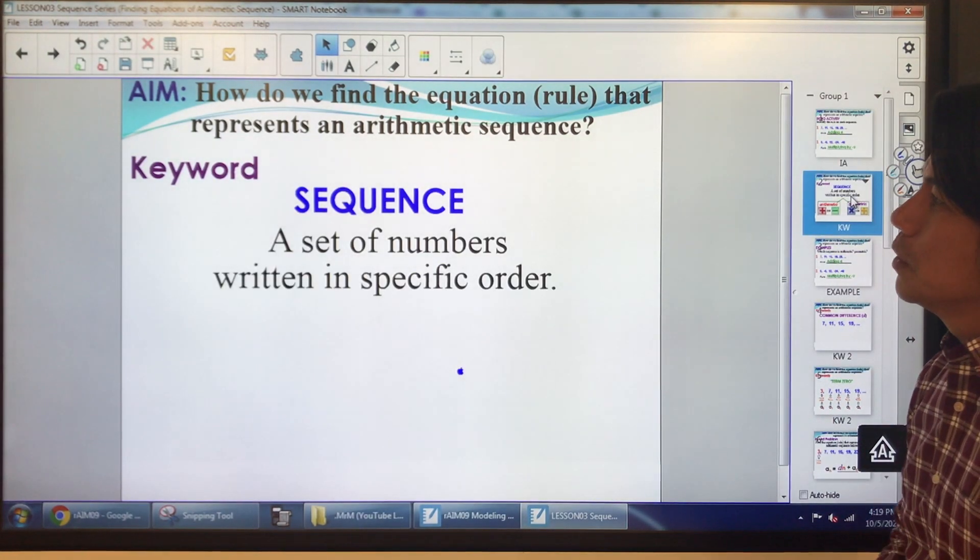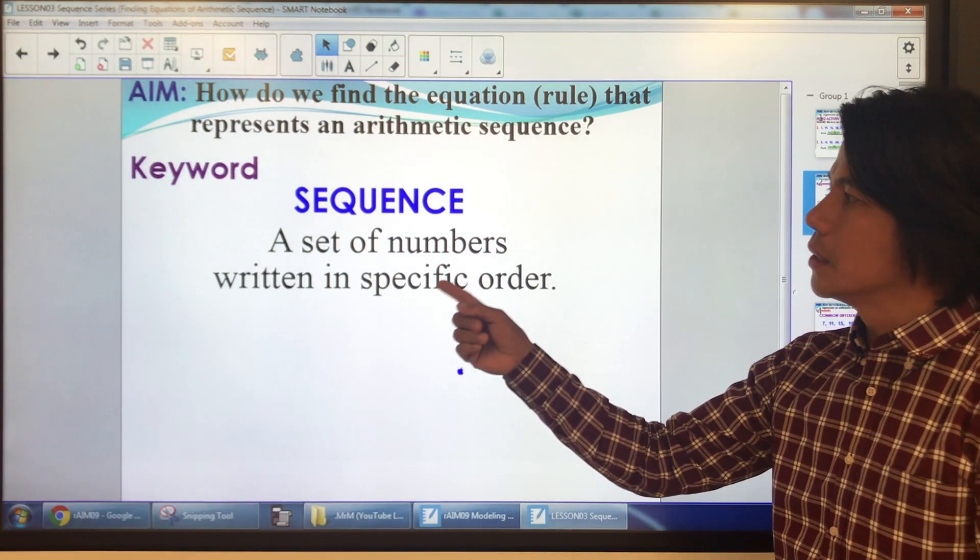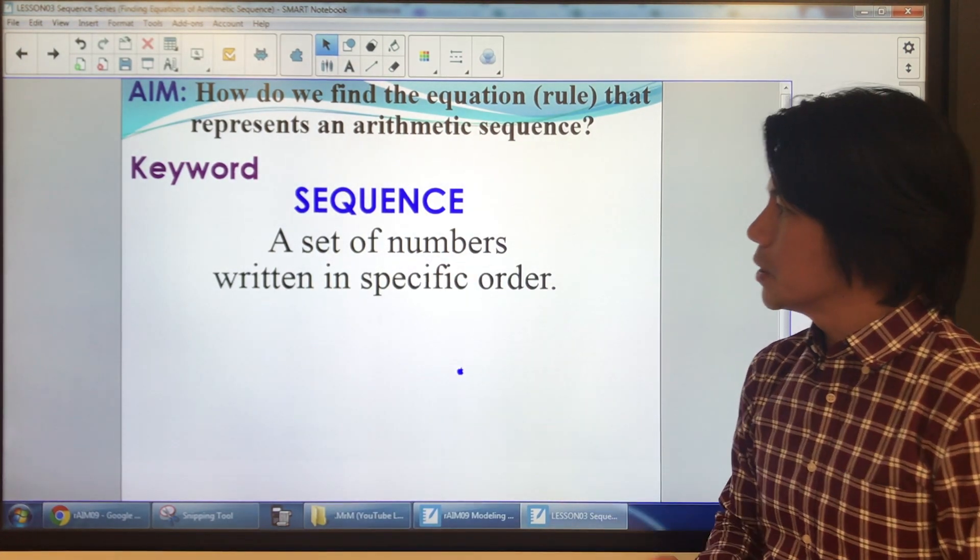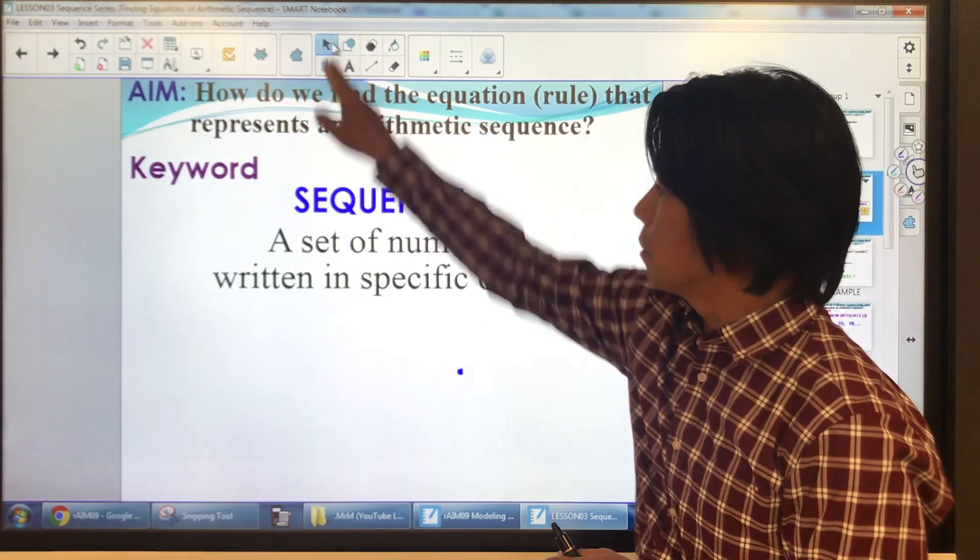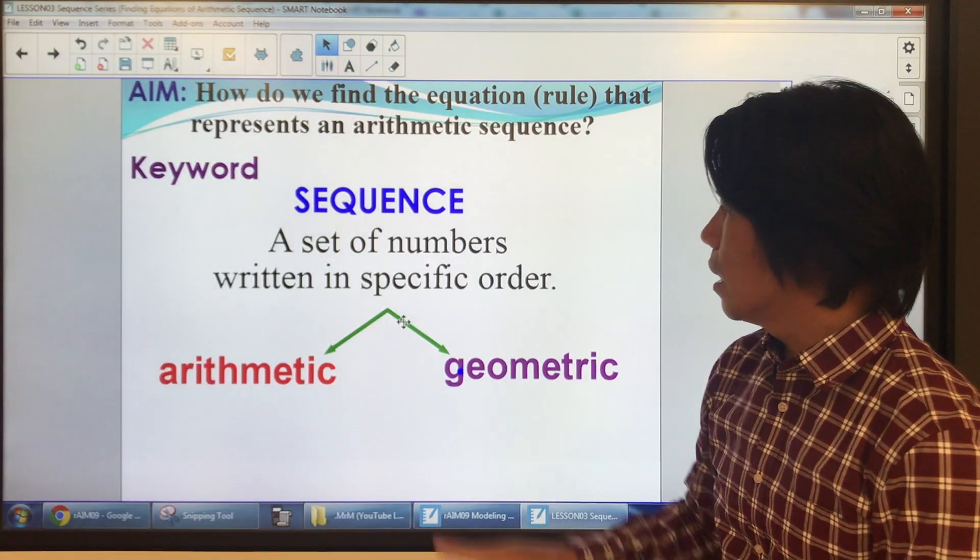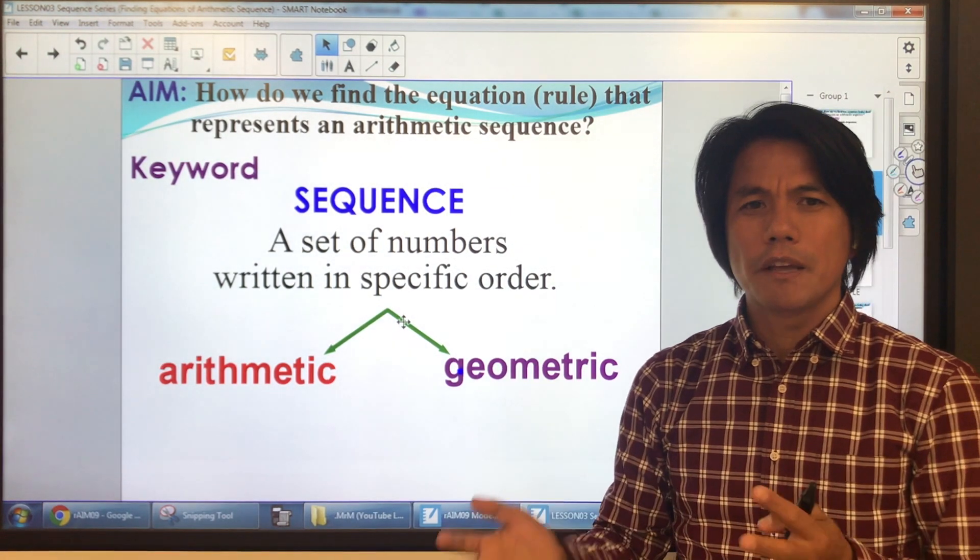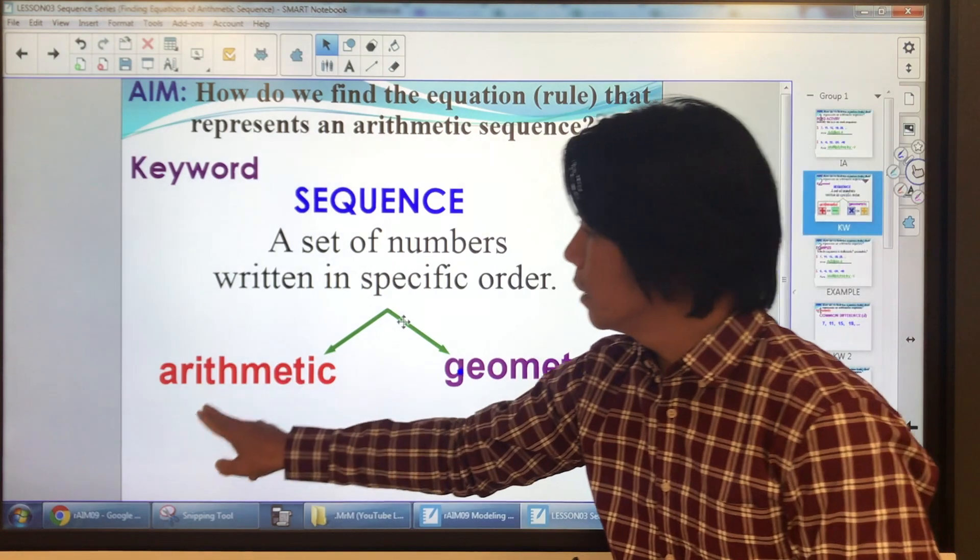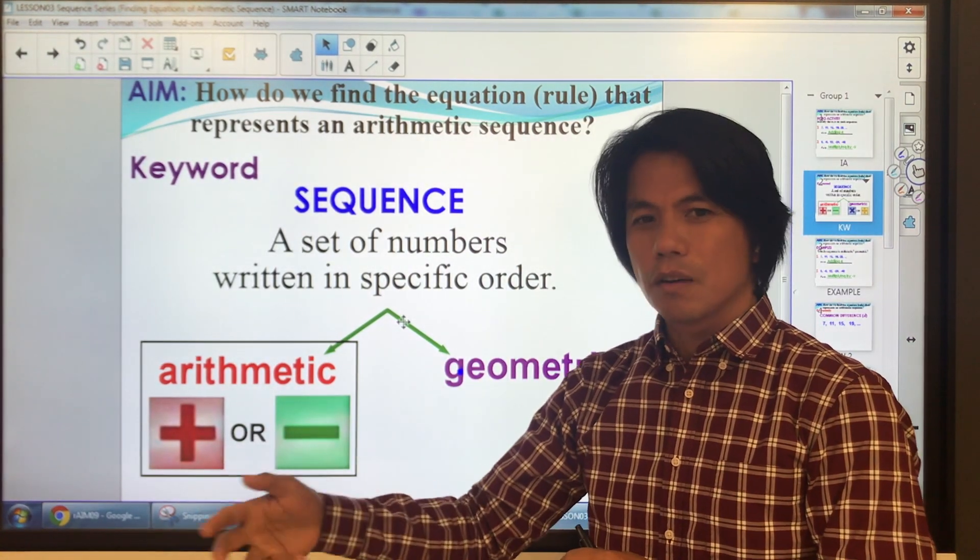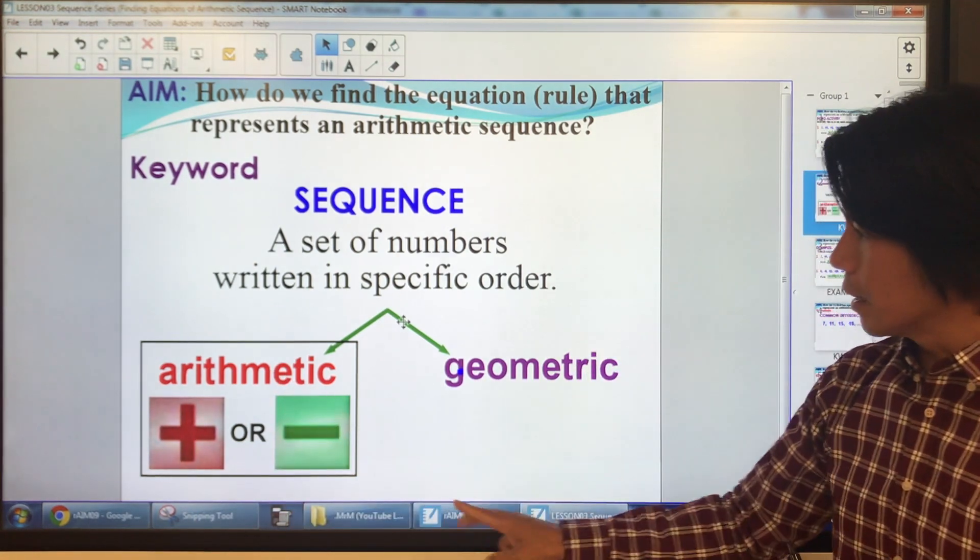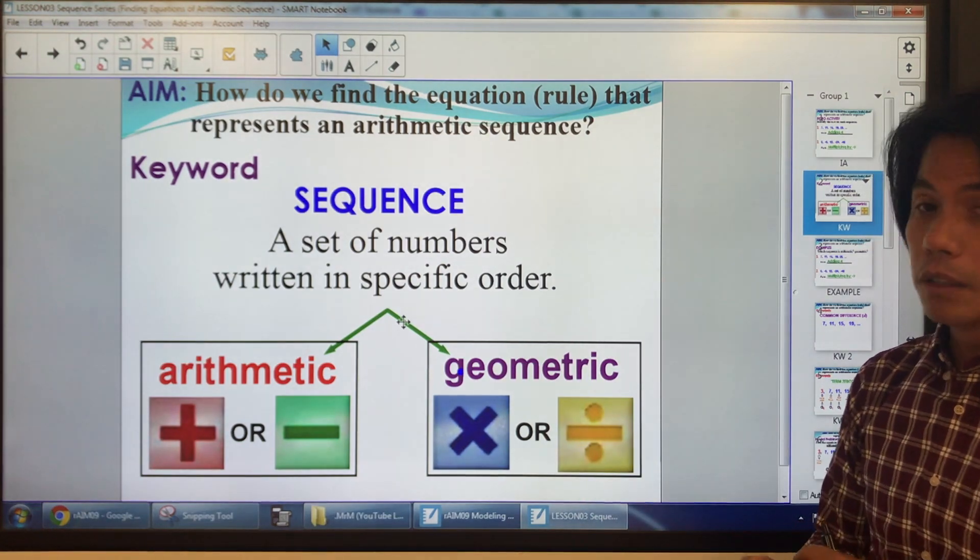Now, let's go to the keyword. From the previous video, we learned that sequence is a set of numbers written in a specific order. Now, this time, we have two different categories, which are arithmetic and geometric. What is the difference? Basically, when you're adding or subtracting, or the rule is by adding or subtracting, then it's arithmetic.